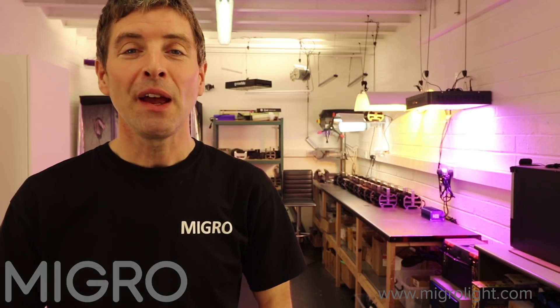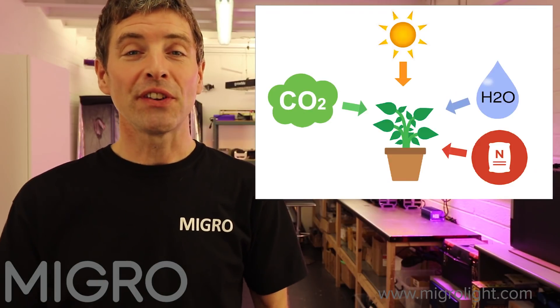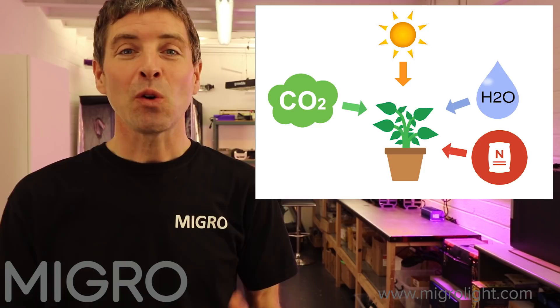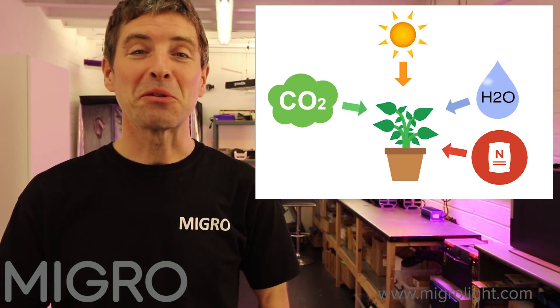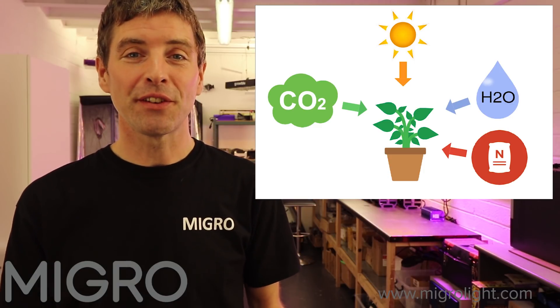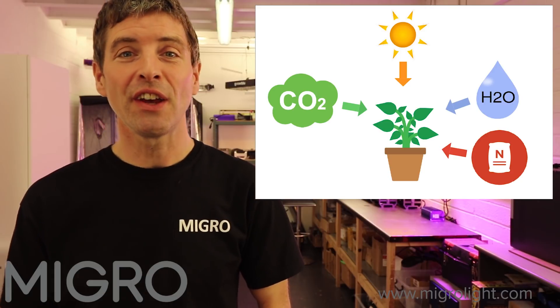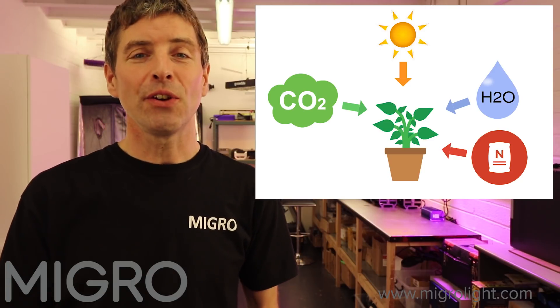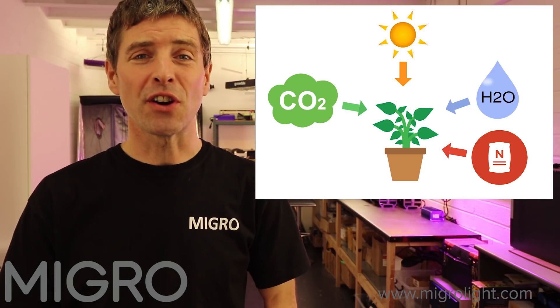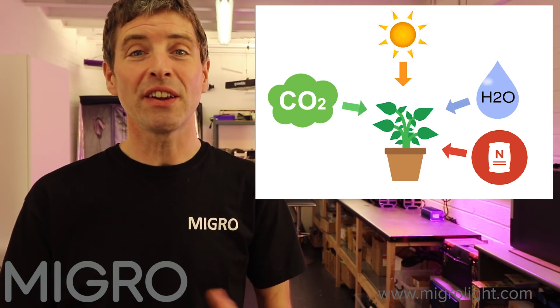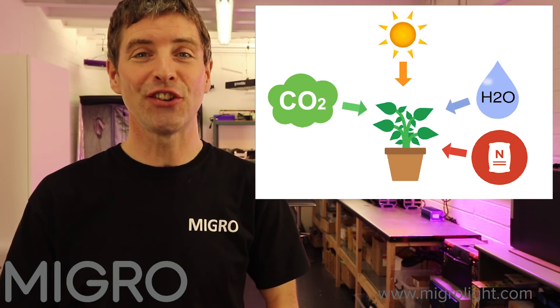Plants of course need adequate water and nutrients to grow healthily, but photosynthesis — which is the driver of plant growth — will be largely determined by the amount of light the plant receives, the amount of CO2 the plant receives, and also the temperature of the environment, which will determine the rate that photosynthesis occurs.